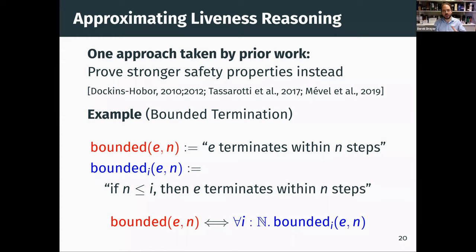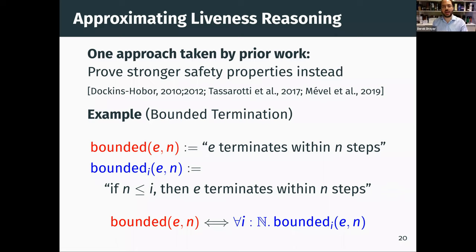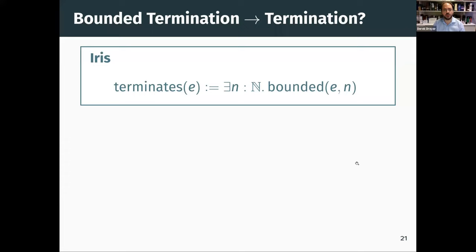This approach has been taken in a number of prior works. There are many details about how you actually formulate these bound determination properties in a separation logic like Iris. But with bounded termination in hand, a natural question arises: if you can express bounded(E, N) in your logic, why can't you lift that to an encoding of general termination — the true liveness property? Why can't we define terminates(E) as exists N, bounded(E, N) as a predicate in Iris?